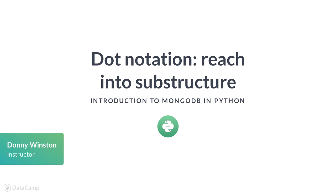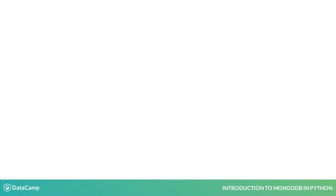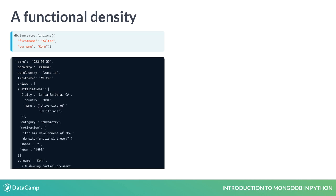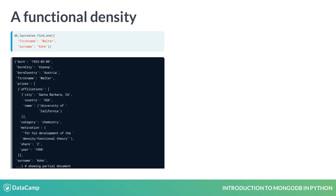Dot notation is how MongoDB allows us to query document substructure. Let's use the find1 method to retrieve one of my favorite laureates. Walter Cohn co-developed an important technique for computational chemistry. Notice that the prizes field is an array. In this case, the array has one element with data on Cohn's two-way share of the 1998 prize in chemistry.